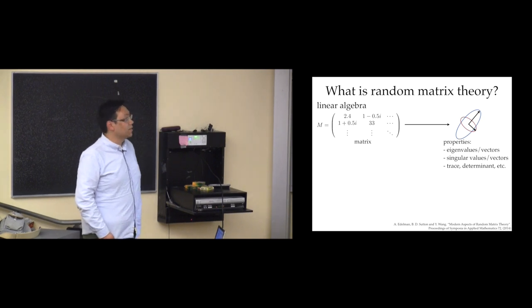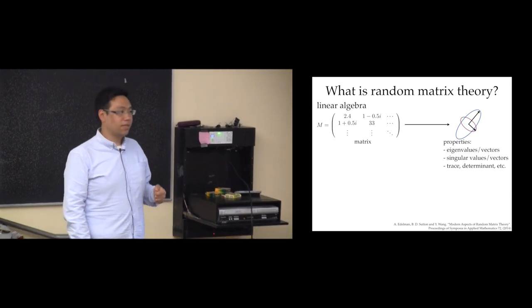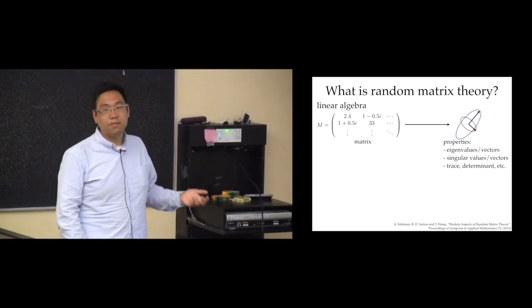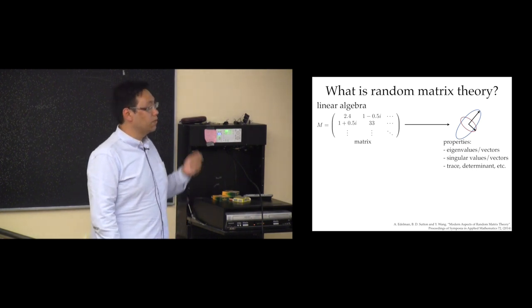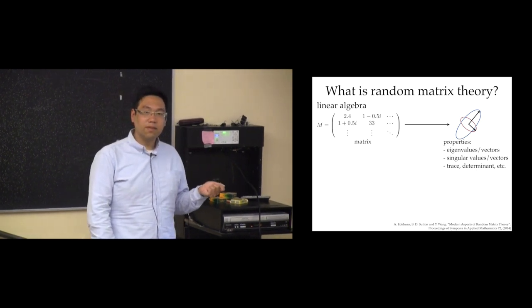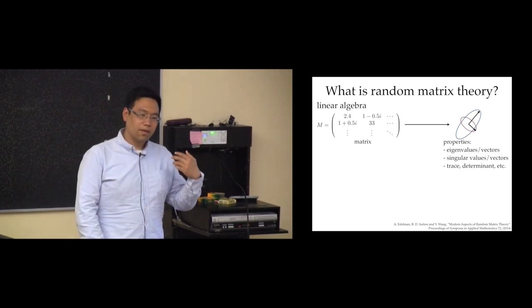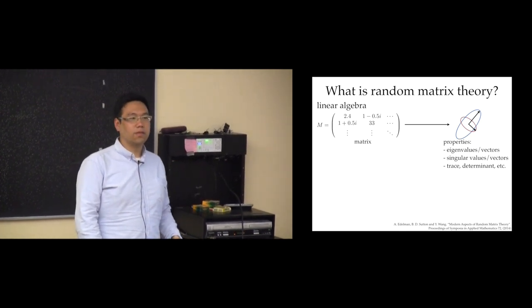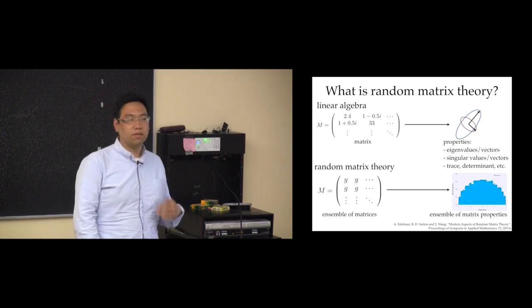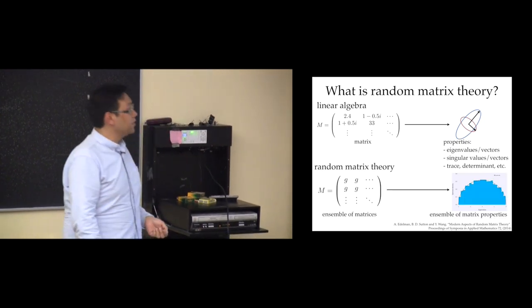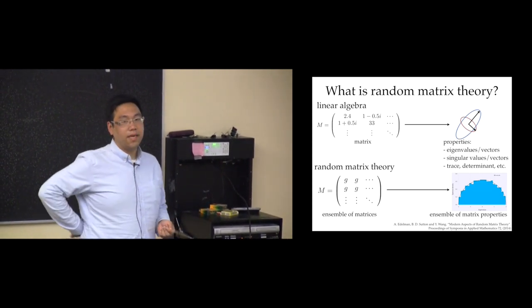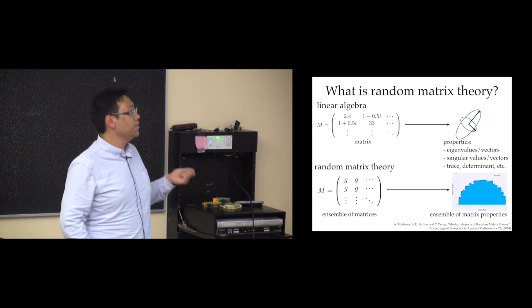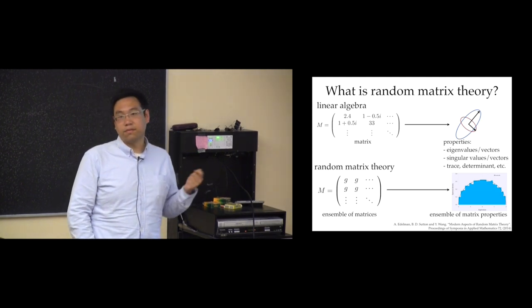You could ask about things like eigenvalues and eigenvectors, singular vectors, matrix traces, determinants. These are concepts most naturally expressed by considering this abstract notion of a matrix as separate from the underlying application when solving systems of linear equations. Random matrix theory is really the generalization of linear algebra to the case where matrix elements are not numbers but themselves random variables.